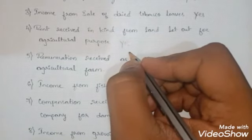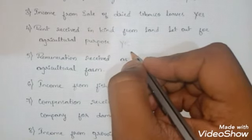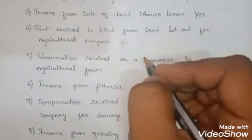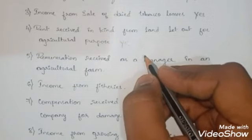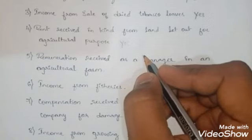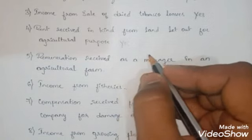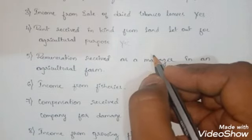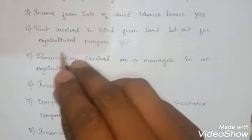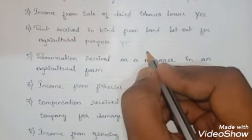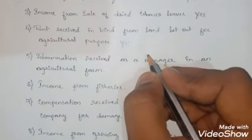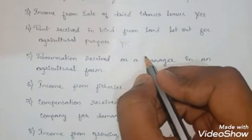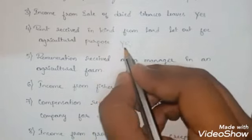Fourth: rent received in kind from land let out for agricultural purpose — the answer is yes. Two things to notice: rent received in kind is valid — it is not necessary that rent must always be in the form of cash; it can also be in kind. Additionally, the rent is received from land let out for agricultural purpose, so this income is treated as agricultural income.